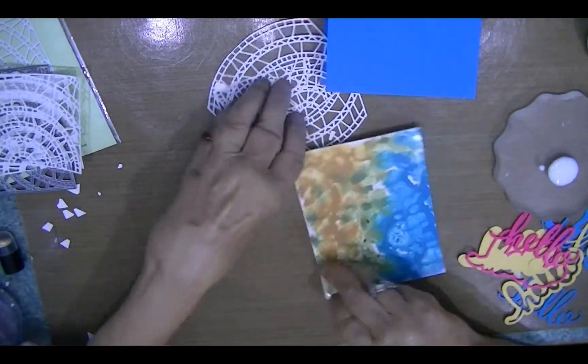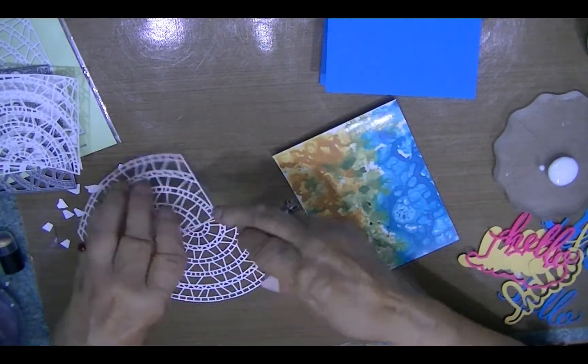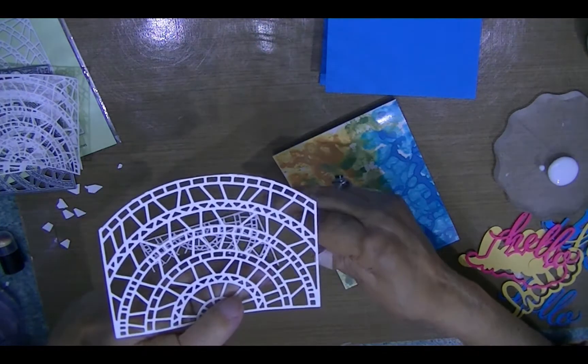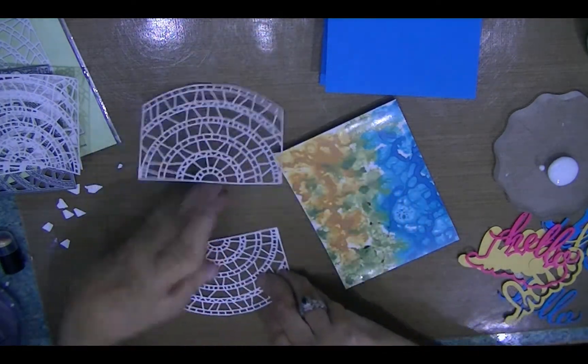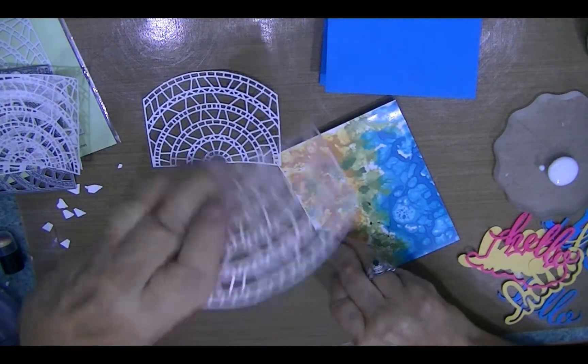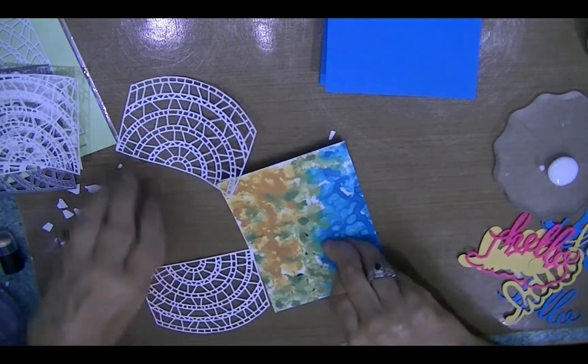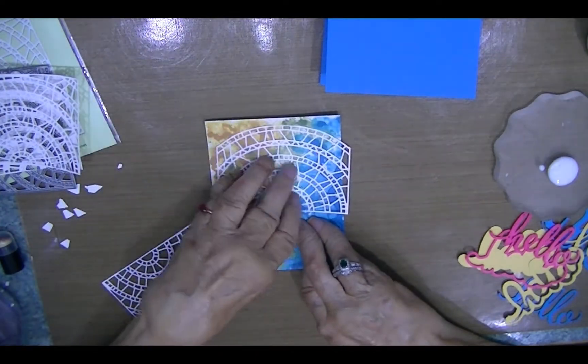Now what I'm doing for my card is I'm going to use two of them. So I cut off the corners on each piece and I'm going to lay it on here.